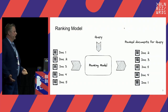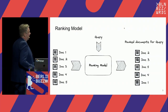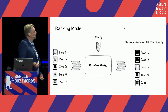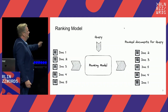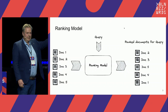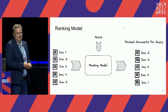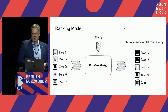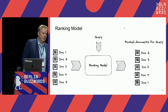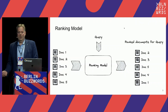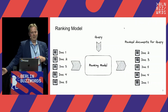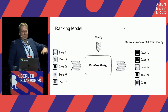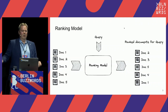On a very high level, even if you have billions of documents, a ranking model comes down to taking a query and a lot of documents and ordering these documents. Forget about inverted indexes, BM25, Elasticsearch versus vectors — this is on a higher level what we want to accomplish.